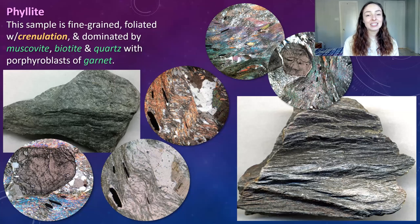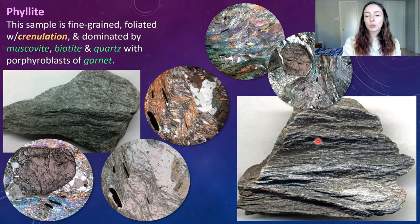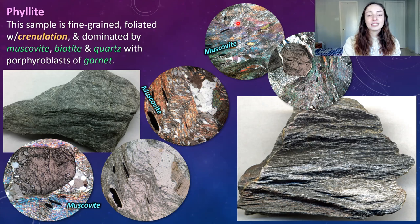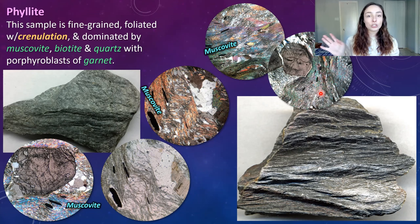Phyllite is the next metamorphic rock we'll look at. This is a fine-grained foliated rock with crenulation. Crenulation is just the highly folded, wavy foliated texture of phyllite. This thin section, as shown by these five images, is dominated by muscovite, biotite, quartz, and porphyroblasts of garnet. The muscovite in each thin section is the extremely foliated mineral that is rainbowish in color under cross-polarized light, present in all of the labeled samples.